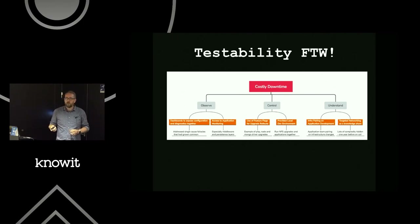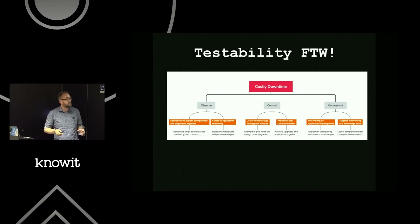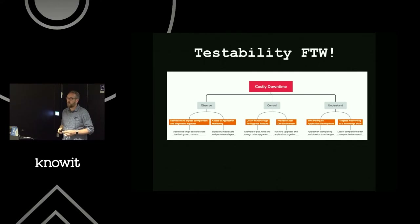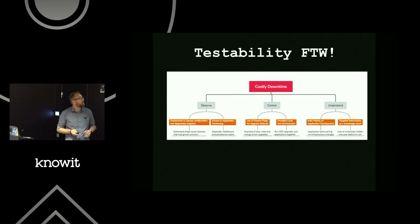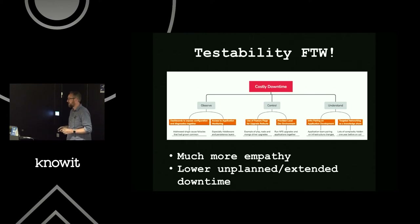Instead of giving them a big new production-like environment, we said, 'Here's our dev environment — here's how easy it is to build,' since it was just a containerized solution. And the biggest one for infrastructure was pairing on application development. Then we targeted networking for knowledge sharing, because networking is usually one of the more complex areas where people who've been there for ages know every little bit of complexity in the network setup. As a result, there was much more empathy between the teams and a lot lower unplanned and extended downtime.